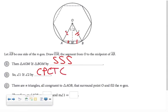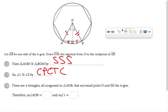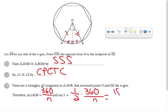And since there are N triangles in this polygon that are all congruent to triangle AOB, then the measure of angle AOB would be 360 divided by N because there's 360 degrees going around a point. And since angle 1 is half of angle AOB, it would be 360 over 2N, which is equivalent to 180 over N.